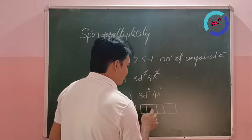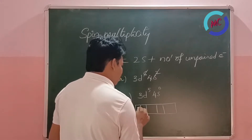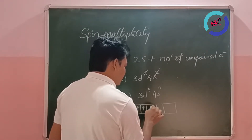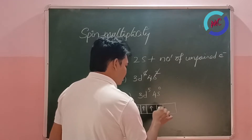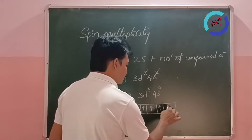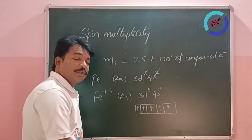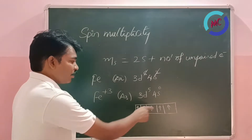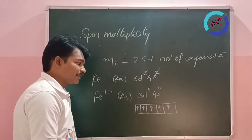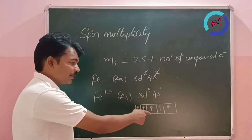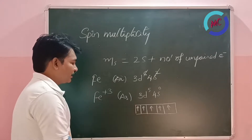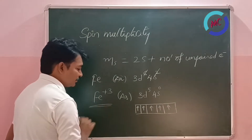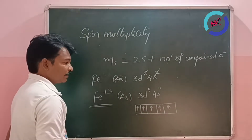With the 3d⁵ configuration, filling 5 electrons according to Hund's rule, we get 5 unpaired electrons — one in each of the five 3d orbitals. So there are 5 unpaired electrons in the ground state of ferric ion.